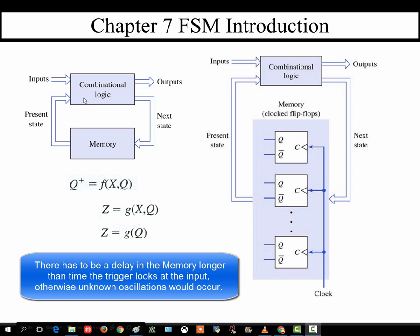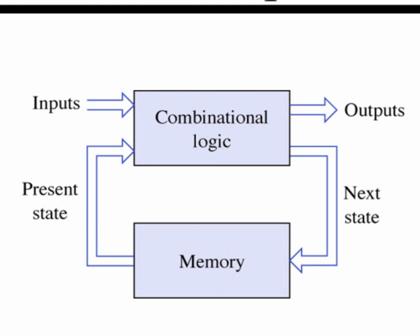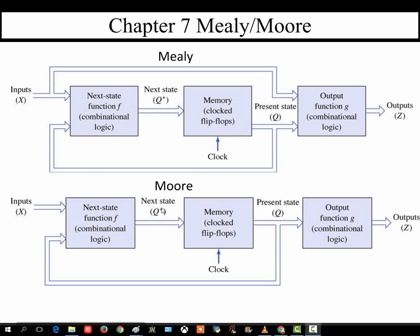The current Q's then begin combining with inputs to create our next Q-plus and our output Z. In chapter 6, our output was just dependent upon the present state. Now we're expanding — Z could also combine with inputs to create an output. In chapter 6 we took the memory of our flip-flops and sent it straight to the outputs. Now we can mix our inputs with that memory to create our output.